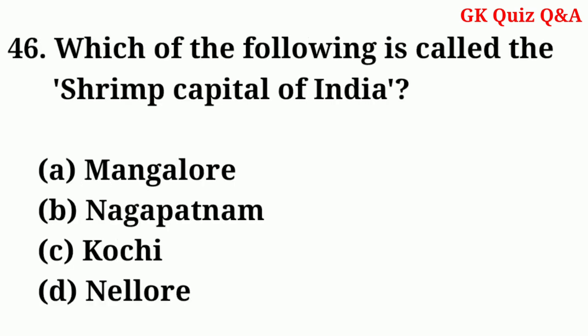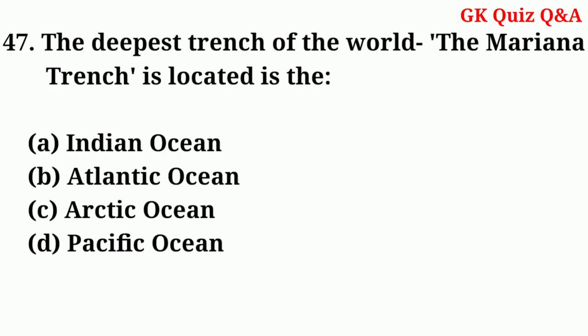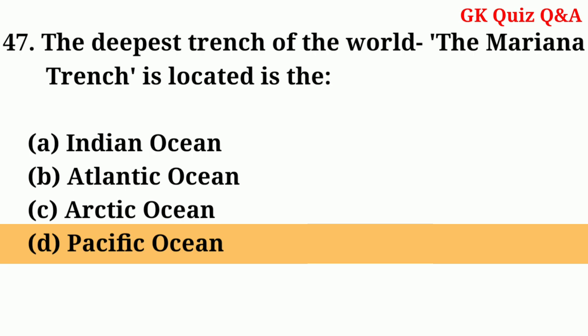Which of the following is called the Shrimp Capital of India? Answer: Nellore. The deepest trench in the world, the Mariana Trench, is located in? Answer: The Pacific Ocean.